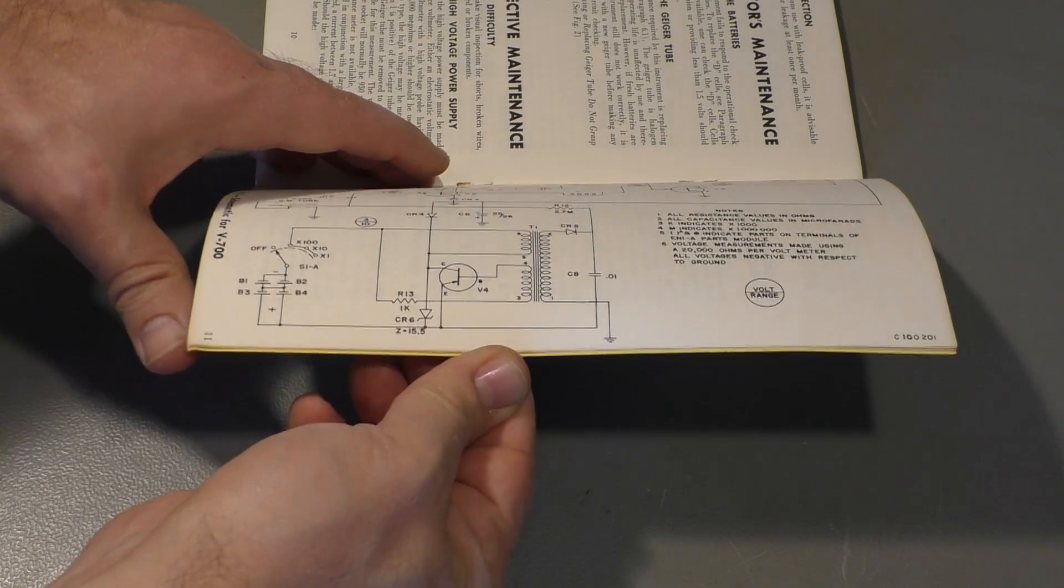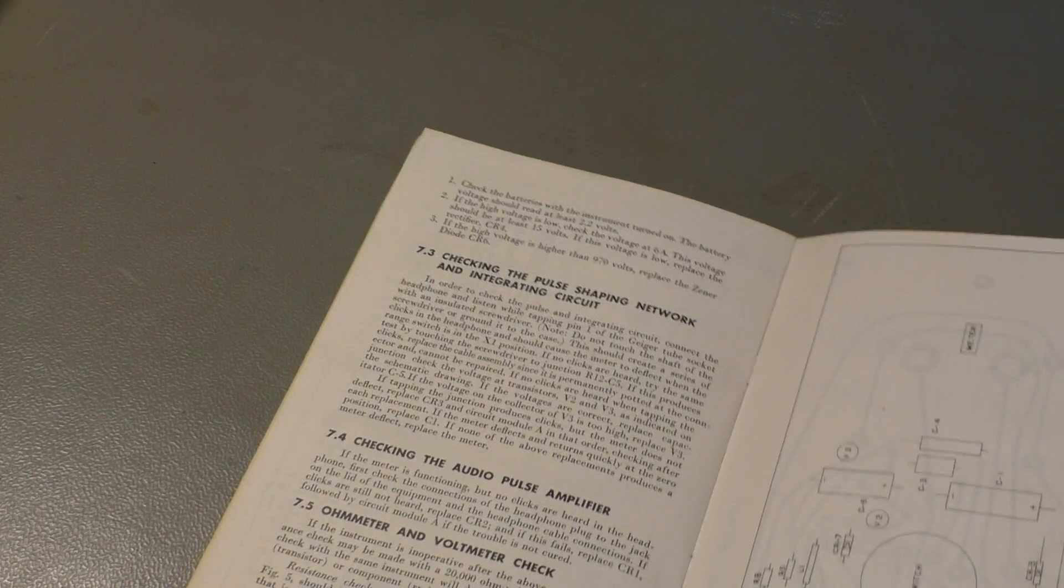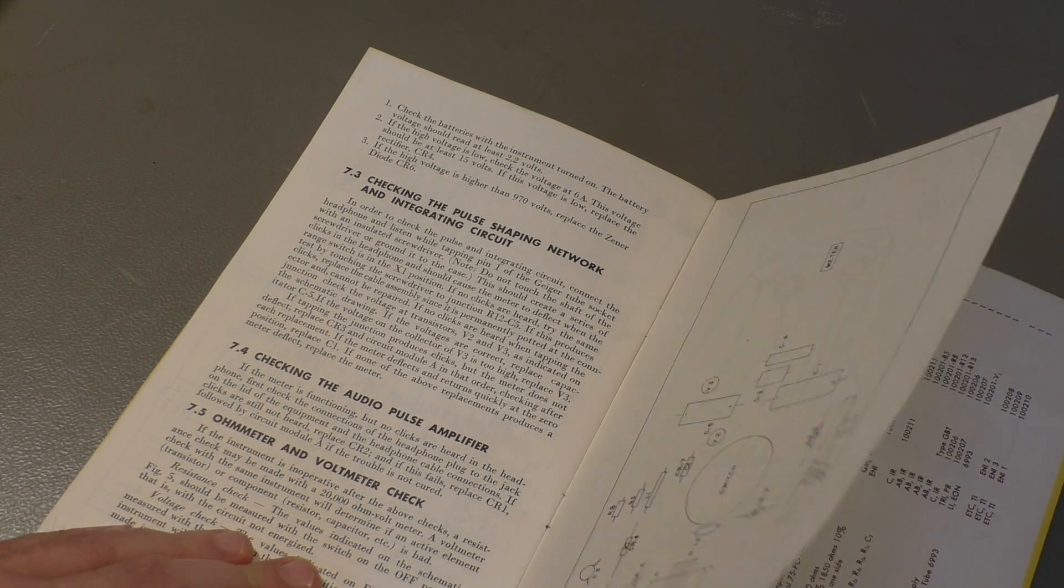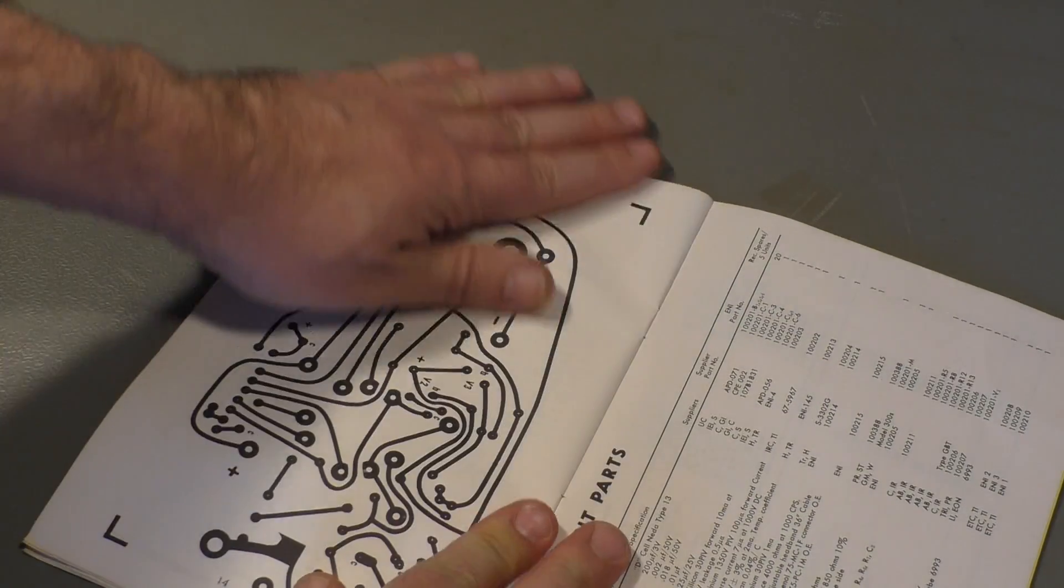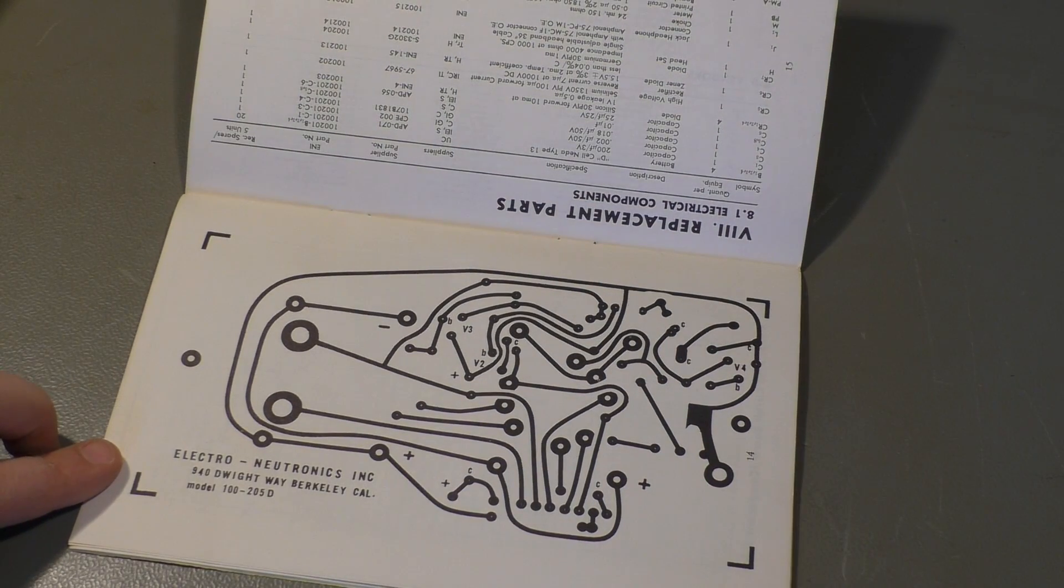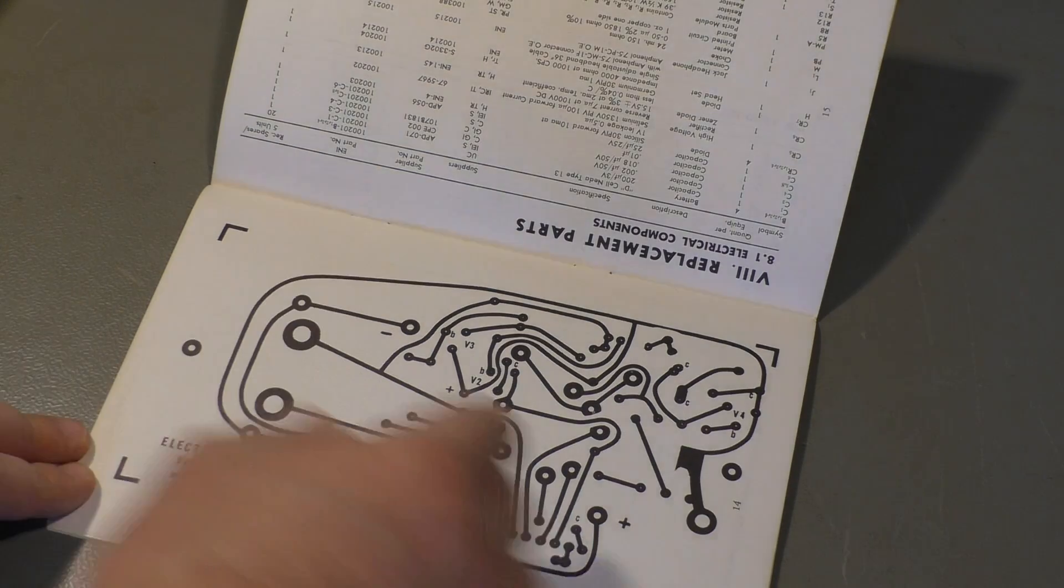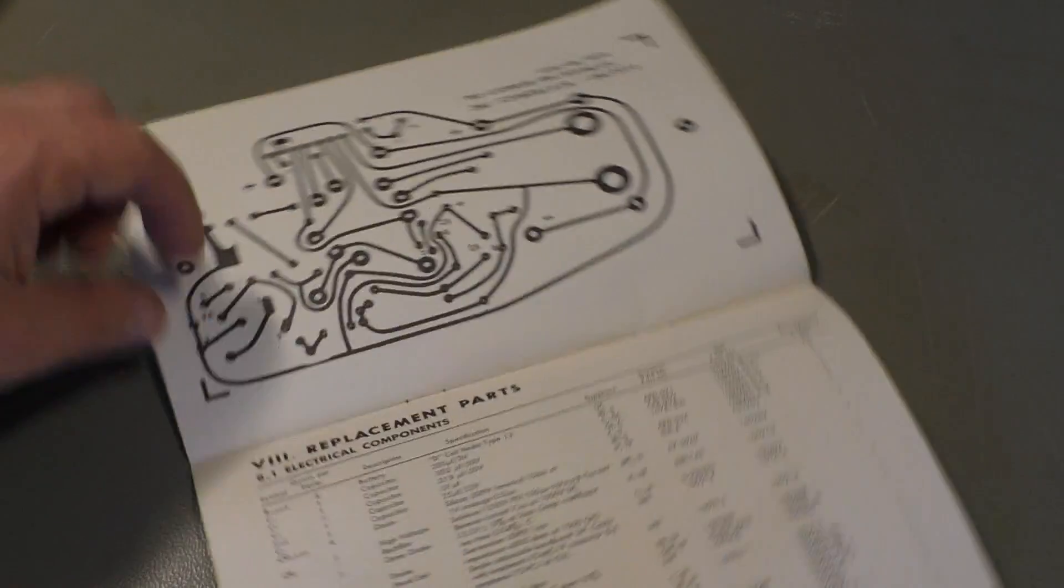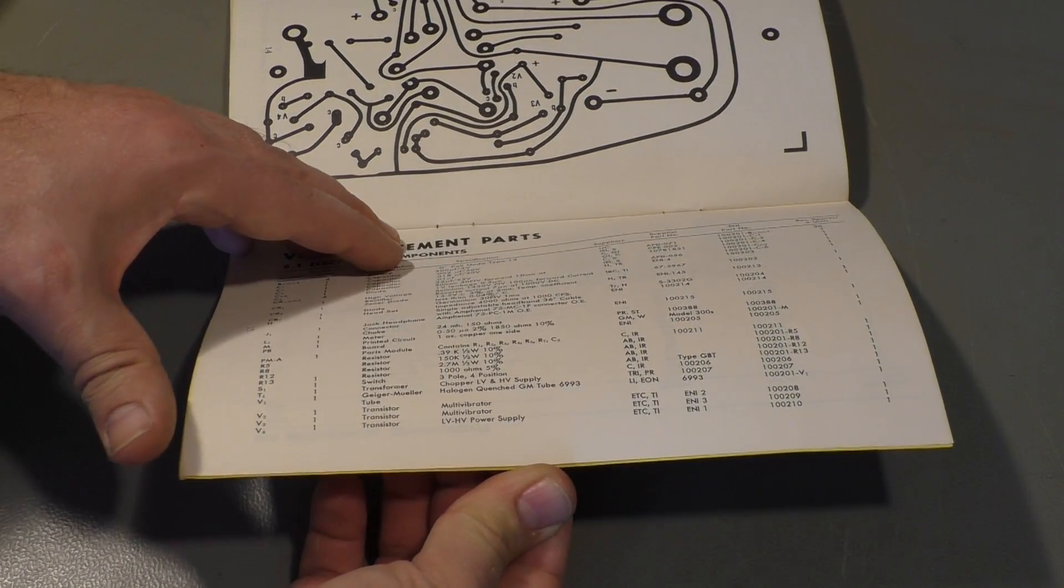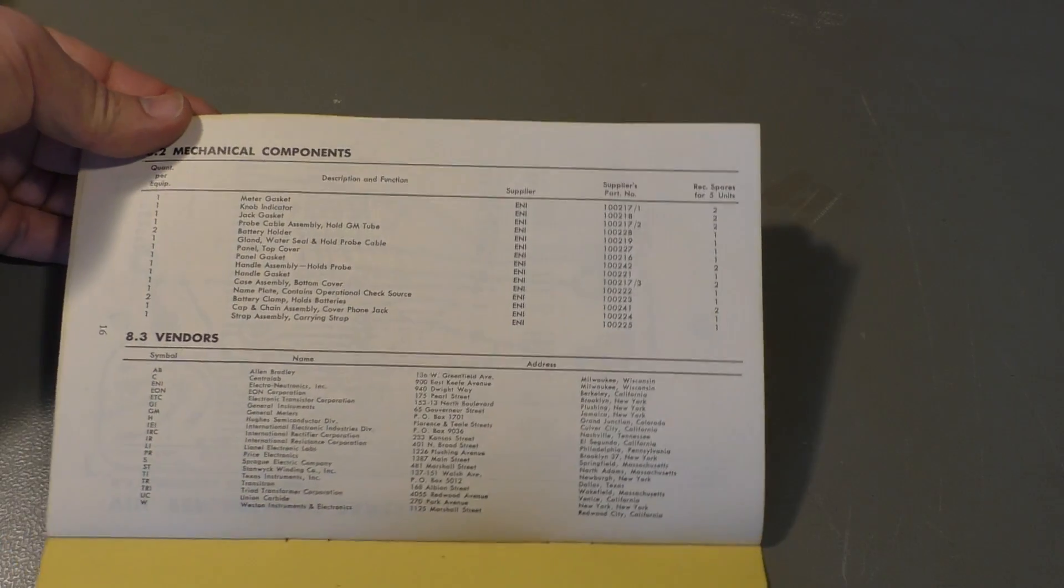And also a very precise description of all the circuits, including a sketch for the blueprint for the PCB. So if you want, you can make one by yourself. There is the part list. Everything here in military precision with part numbers and everything.